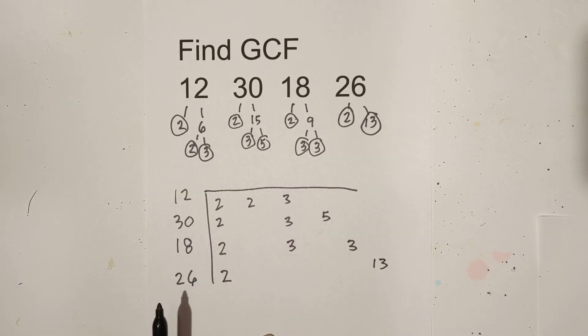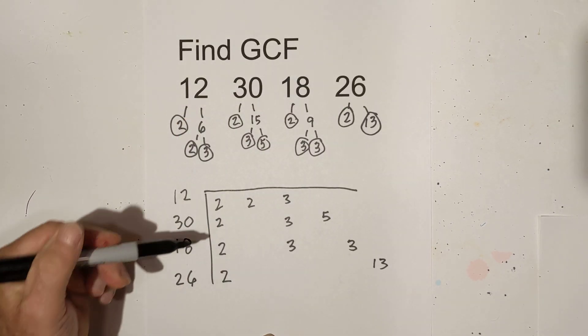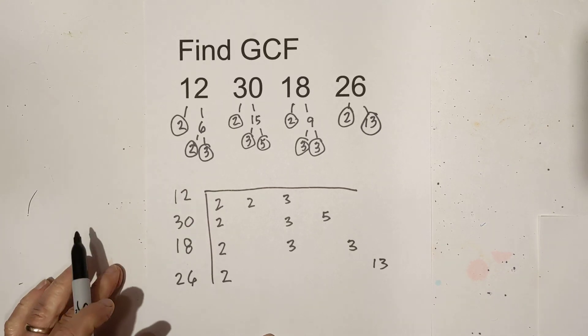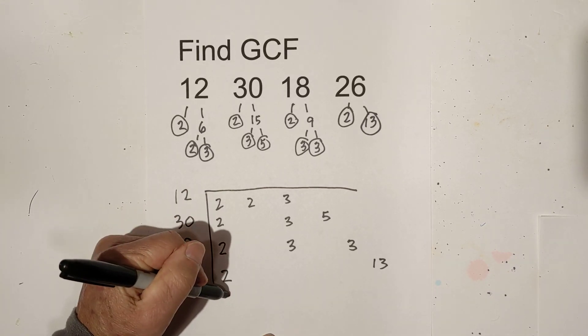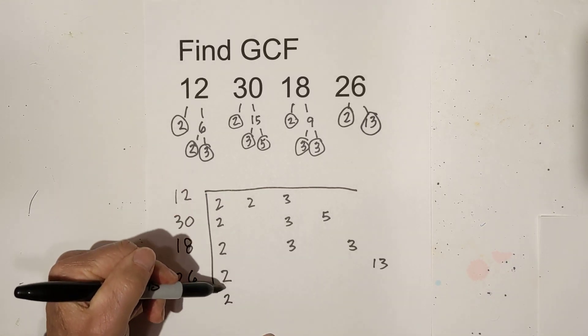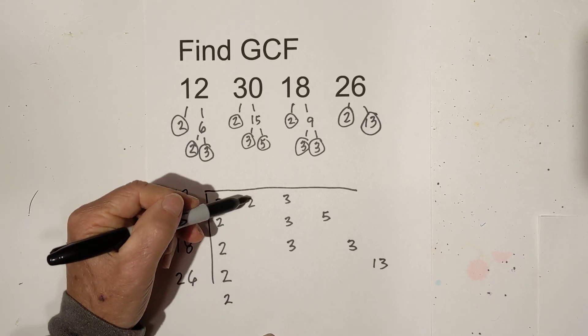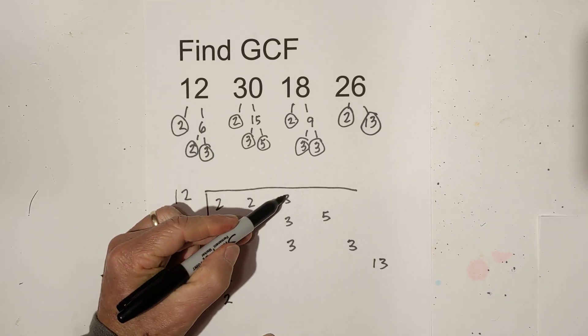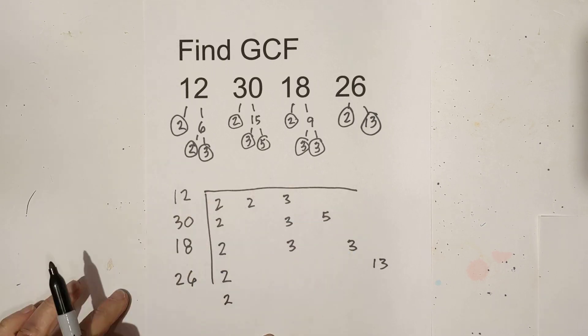And now because I have 4 numbers, it has changed and I need 4 numbers in a column. And therefore I've got 4 in this column. So I'll bring the 2 down here. I don't have it here. I don't have it there. No, no, and no.